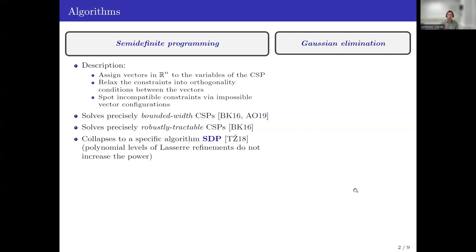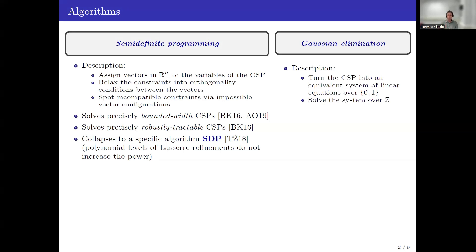The other class is Gaussian elimination, or more precisely, an abstraction of it. The idea is that I start with my CSP, consider an equivalent system of linear equations over 0 and 1, where 1 means I have an assignment of a variable to a value and 0 means I don't. I cannot solve this system over 0 and 1 in polynomial time most likely, so I relax it over the integers. Unsurprisingly, the class of CSPs solvable via this approach are those that behave like linear equations.